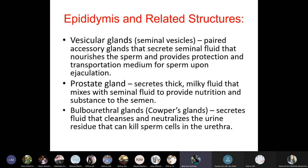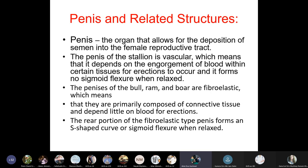The penis is the organ that allows for deposition of semen into the female reproductive tract. The penis of the stallion is vascular, meaning it depends on engorgement of blood within certain tissues for erection to occur, and forms no sigmoid flexure when relaxed.